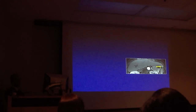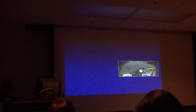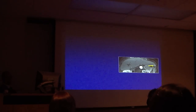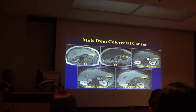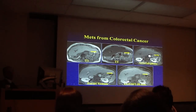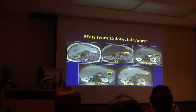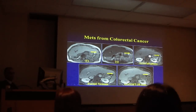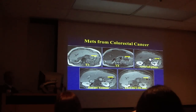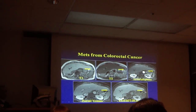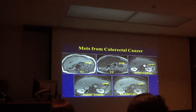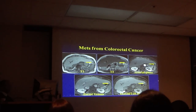Next lesion. On T1-weighted images you can see the lesion hypo-intense. On T2-weighted images it is sort of subtle, hyper-intense. On arterial phase it definitely enhances. On the portal venous phase it washes out. On EOB 20-minute delayed images, it does not take up EOB. So it is a worrisome lesion. The patient actually had colorectal cancer and this was metastatic disease — pathology proven.